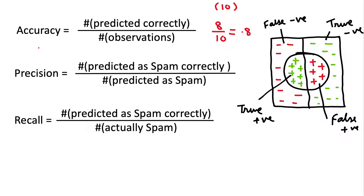Precision is a very close term; in normal literature it may seem similar, but precision means: let's say out of 10 messages, the model said that 7 are spam, but out of those 7 only 6 were actually spam and 1 was wrongly classified as spam. So 6 is the true positive — it correctly predicted spam for 6 out of the 7 it predicted as spam, and 7 is the total predicted as spam, which is the denominator.